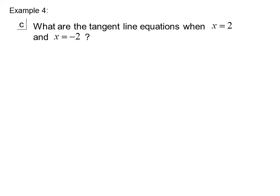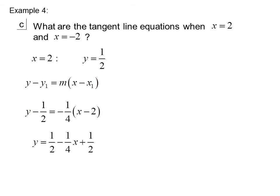What are the tangent line equations when x equals 2 and x equals negative 2? At x equals 2, y is one-half. We get that by putting it into the original equation. We use the point-slope equation: y minus y1 equals m times (x minus x1), or y minus one-half equals negative one-fourth times (x minus 2). We simplify that to get y equals negative one-fourth x plus 1.